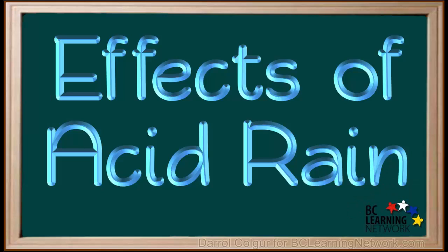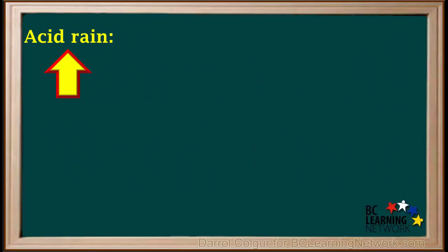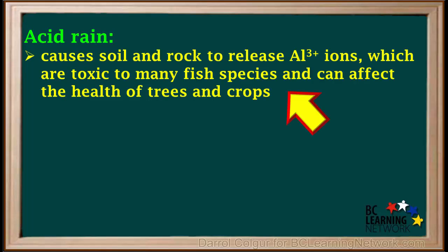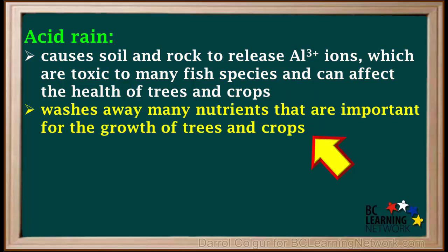The reason people are concerned about acid rain is it has some serious effects. Acid rain causes soil and rock to release Al3+ ions. Aluminum ions are toxic to many fish species and can seriously affect the health of trees and crops. Acid rain can also dissolve and wash away many of the good nutrients that are needed by trees and crops.